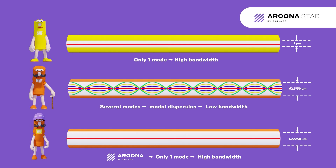In contrast, the larger core of a multimode fiber allows light to take several paths simultaneously. These are the modes of the optical fiber, and their optical paths have different propagation speeds. We call this phenomenon modal dispersion.